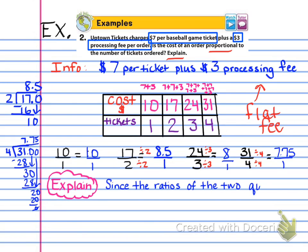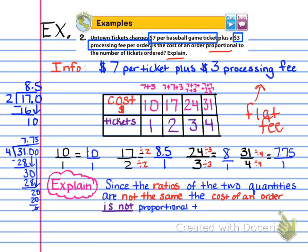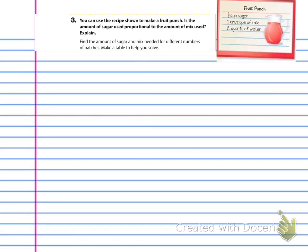So that's why this is not going to be a proportional relationship. So the explain that you're going to see here, you want to write explain in a bubble. And then you want to write, since the ratios of the two quantities are not the same, the cost of an order is not proportional to the number of tickets ordered. So I've also outlined the important words here in red. So you definitely want to be using your colored pencils or pens to outline the important words here. These are all parts of a good explanation that you need to have to get full credit for your answers.